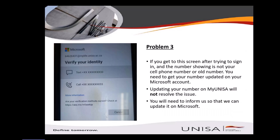The next problem students have: when they log in they get to a screen where the number showing is not their number. If you ever get this problem — that it's showing a cell phone number that isn't yours or is an old number you don't have anymore — you'll have to inform us so we can update your number on the Microsoft side of the system. If you change your number on My UNISA it will not resolve this problem. Don't think changing your number on My UNISA will change it on Microsoft — they are two separate systems.